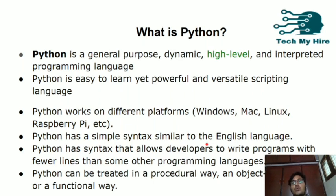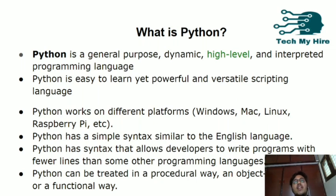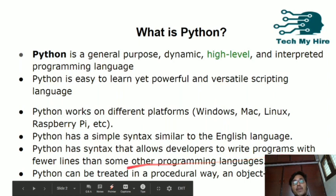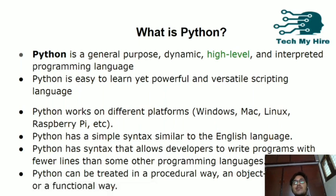Python has simple syntaxes similar to the English language. For example, if a is greater than b, print 2 — if you observe, it is very similar to English. Python has syntaxes that allow developers to write programs with fewer lines than some other programming languages. If you want to write a program in Java it may require huge lines of code, whereas in Python it requires very few lines.